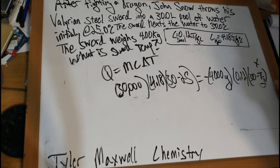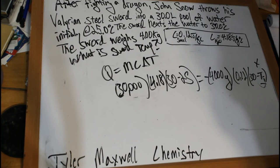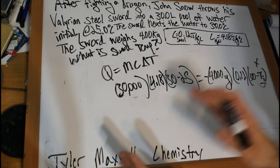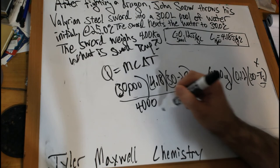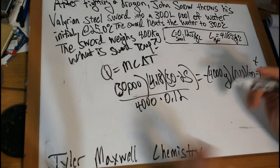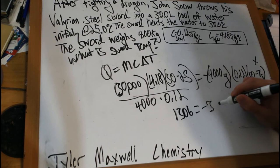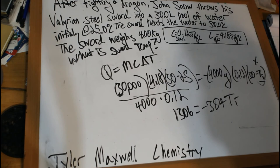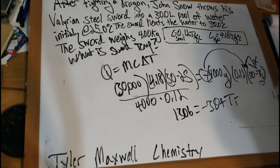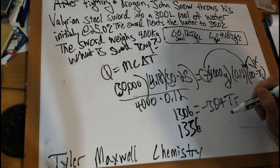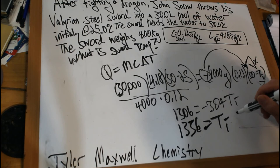What was the sword's initial temperature? So we can just multiply all of this out and then move our 4,000 times 0.12 over here. So basically we get 1306 equals negative 30 plus the initial temperature, because I took this negative and I just distributed it there. So plus 30, 1336 equals the initial temperature. So it's 1336 degrees Celsius.